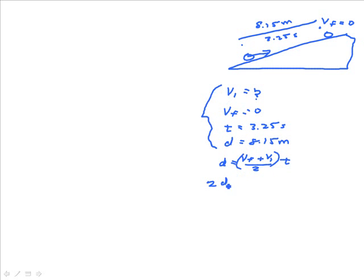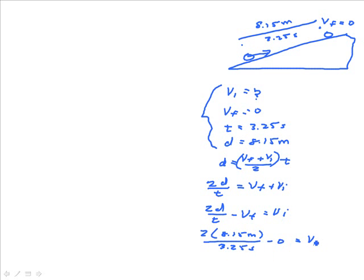So to do that, we go 2d over t. What I did was multiply both sides by 2, divide both sides by t, and I end up with vf plus vi. Then to solve for vi, I go 2d over t minus vf. Now it doesn't really matter much right now because vf is zero anyways, but we get vi. And so 2 times 8.15 meters divided by the time, 3.25 seconds minus zero is equal to vi. And of course, our solution is 5.015 meters per second.